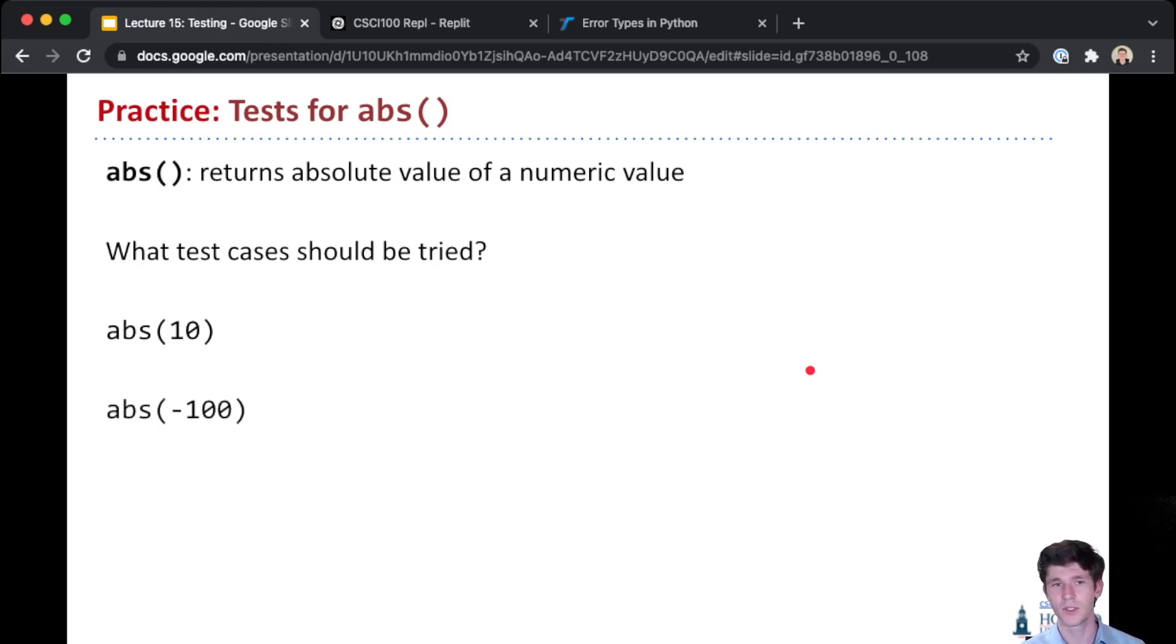Of course, the other case we need to try is the general case of all the negative numbers. So negative 100—the absolute value should be 100. And if it works for negative 100, it probably works for negative 99 or negative 200.